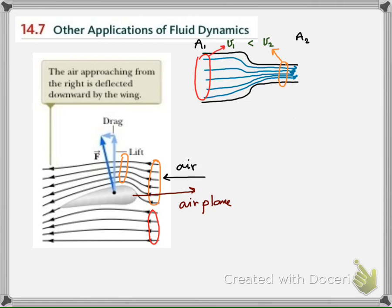So if we look back at the case of the airplane wing, we can use V1 as the velocity of the air beneath the wing and V2 as the velocity of the air above the wing.